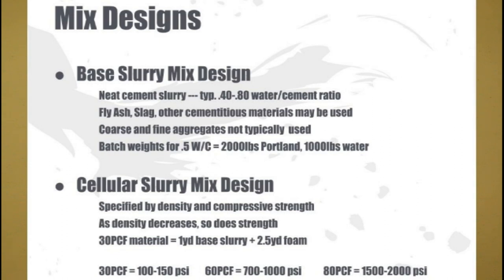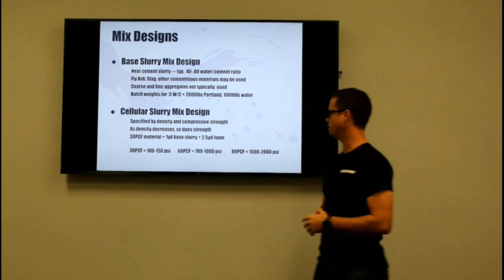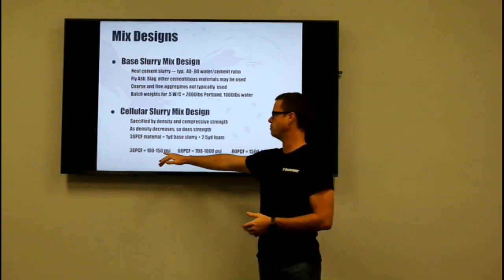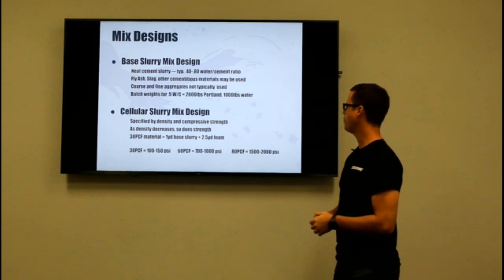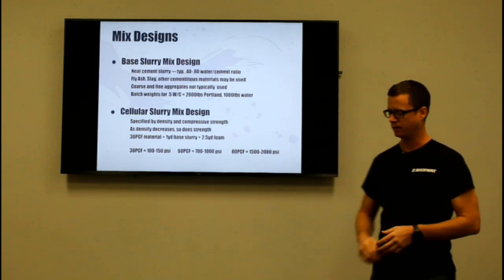The cellular slurry mix design — after foam is added — is typically specified by density and compressive strength, and as density increases so does strength. To produce one yard of 30 PCF material, you take one yard of base slurry and add approximately 2.5 yards of foam. For a 30 PCF material you can expect somewhere between 100 and 150 psi strength, and if you go all the way up to 80 PCF you can achieve 1,500 to 2,000 psi of compressive strength.